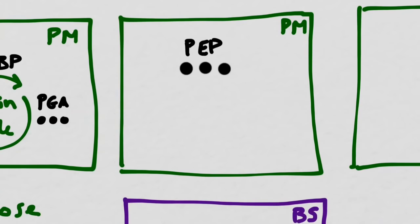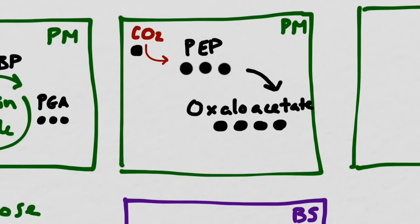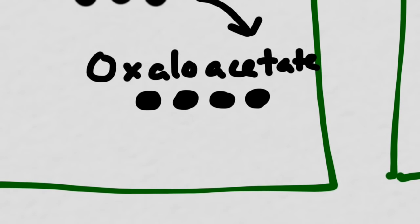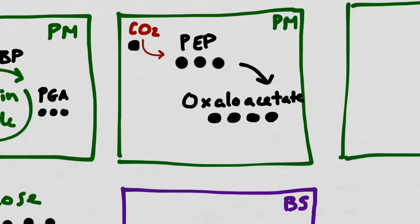PEP has three carbons. Then it combines with a molecule of carbon dioxide, which has one carbon. The two of them together rearrange to form a molecule called oxaloacetate, which has a total of four carbons. This is why this pathway is called a C4 pathway. Its first compound here has four carbons. So we've now fixed carbon dioxide once. We've pulled it out of the atmosphere, combined it with PEP, and made this oxaloacetate molecule.